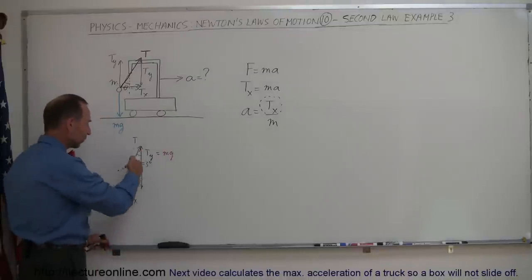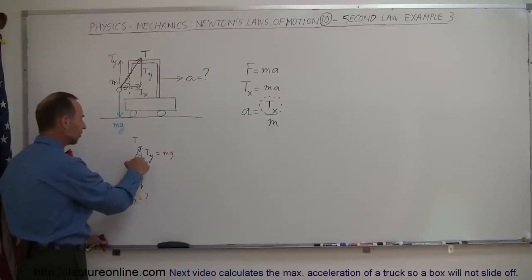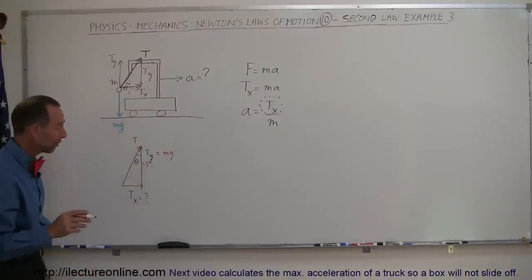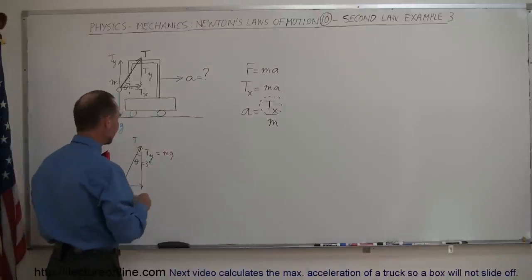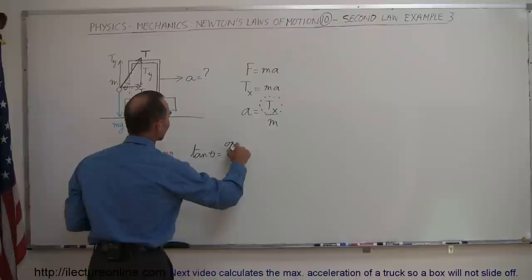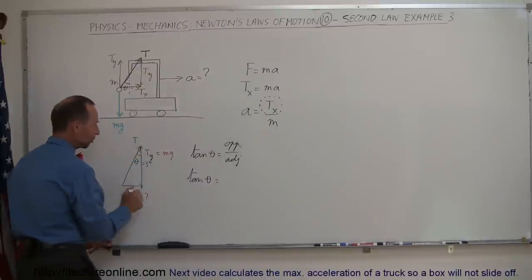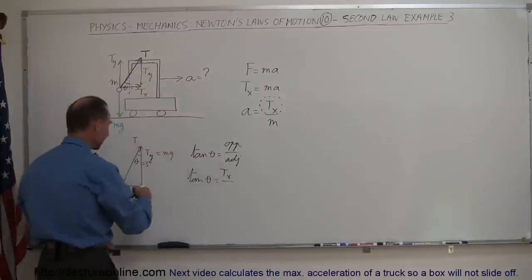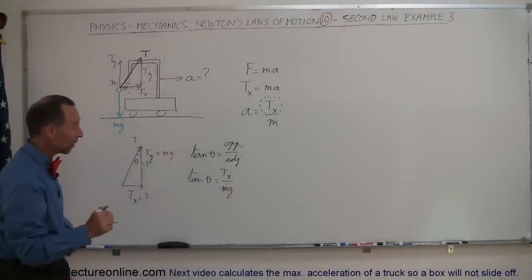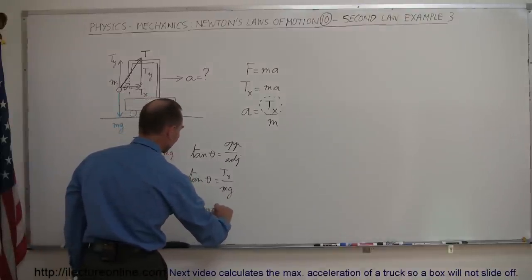Now we have the vertical side MG and we know the angle theta. We need to find the horizontal side T sub X. We find the relationship between these two sides using the tangent of the angle. The tangent of theta equals the opposite side over the adjacent side, so tangent of theta equals T sub X divided by T sub Y, which equals T sub X divided by MG.